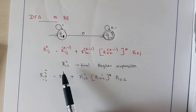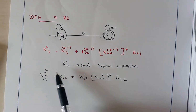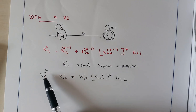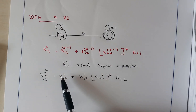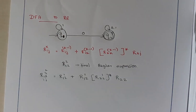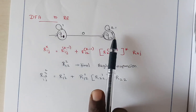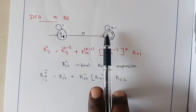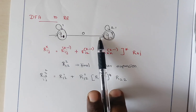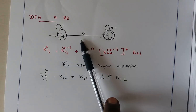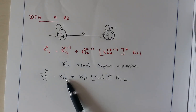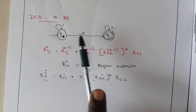According to this formula, when we want to calculate R12 of 2, it depends on R12 of 1. When we want to find the transition with 2 as the intermediate node, we should know about 1 as the intermediate node. And for 1 as the intermediate node, we should know about the 0 intermediate node — where 0 intermediate node means a direct path. With 0 as the intermediate node, we can directly derive values from the given DFA diagram.